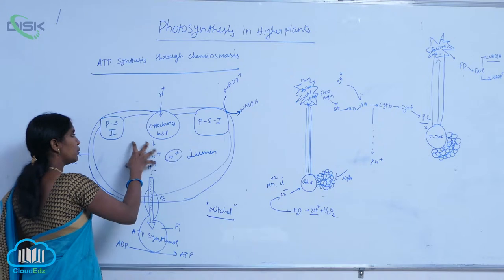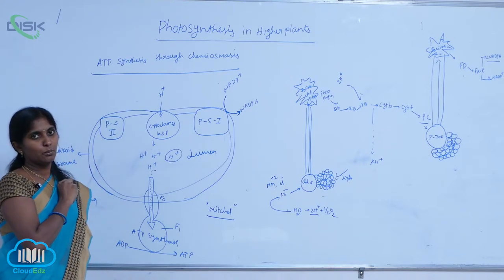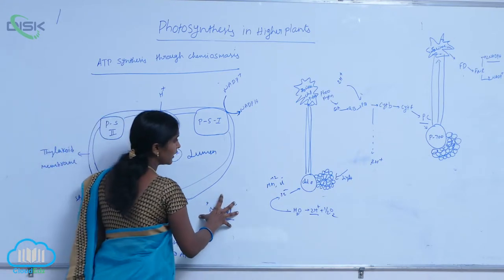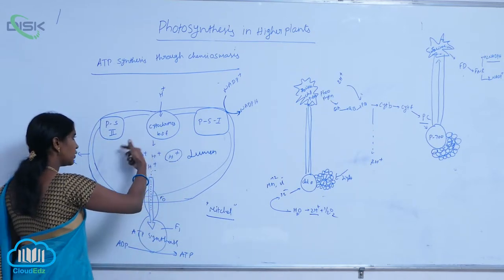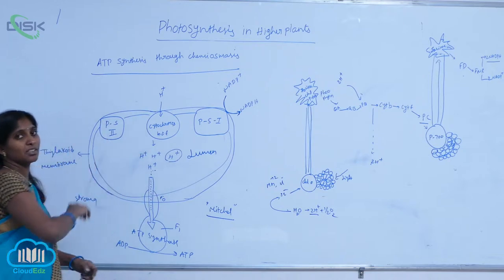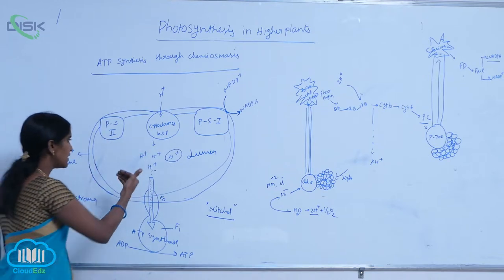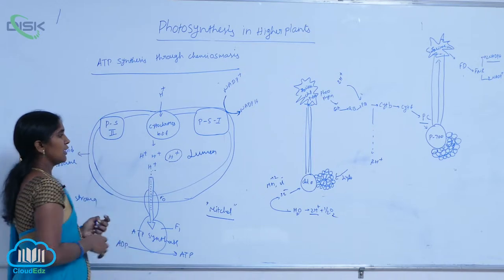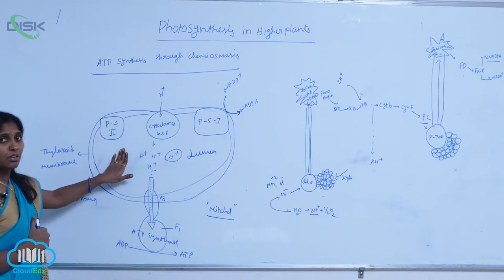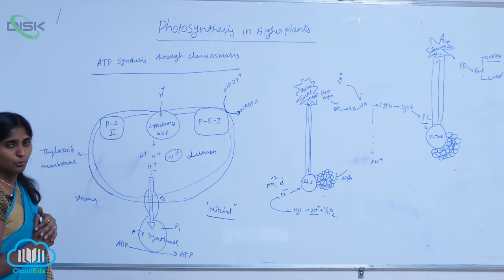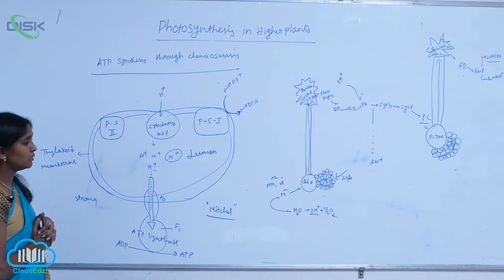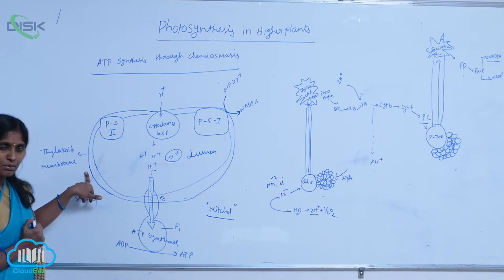A proton pool is maintained inside the lumen, but in the stroma, the number of protons is decreased. Inside the lumen, the pH is increasing — which indicates that the number of protons accumulated inside the lumen is high. However, they cannot transmit freely from lumen to stroma because the thylakoid membrane is present.